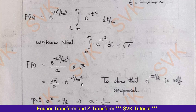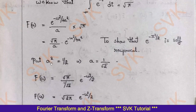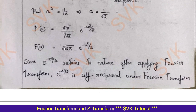To show it is self-reciprocal, put a² = 1/2, so a = 1/√2. After substitution and simplification, e^(-x²/2) retains its form after applying the Fourier transform. Therefore, e^(-x²/2) is self-reciprocal under the Fourier transform.